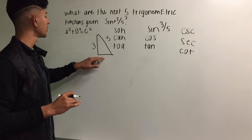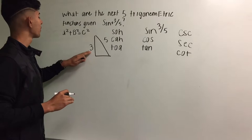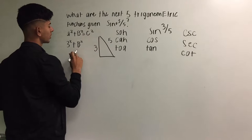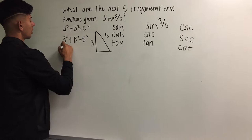It doesn't matter where you put the adjacent or the opposite sides on the Pythagorean theorem, as long as they're in there. So we have 3 squared plus B squared equals C squared. Notice that I'm using the 3 for the A. So 3 squared plus B squared, because that's our missing side, equals 5 squared. That's our hypotenuse.